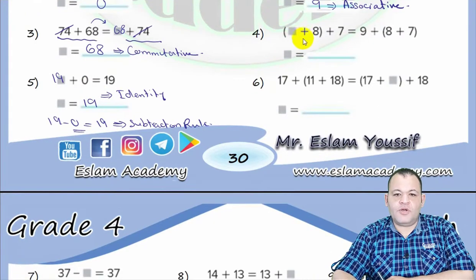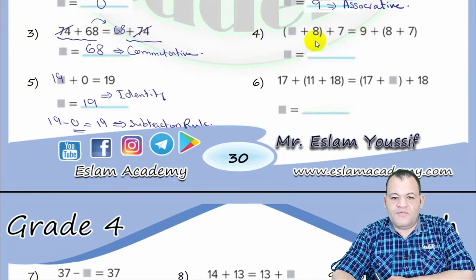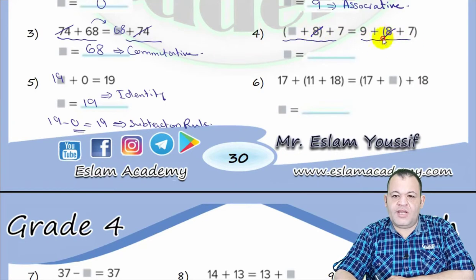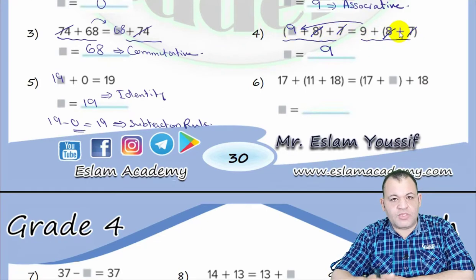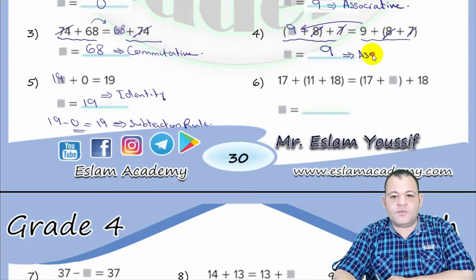In question number four, we have unknown plus 8 plus 7 equals 9 plus 8 plus 7. Because of the equal sign, the left side must equal the right side. We have 8 and 8, and 7 and 7, so the missing number is 9. We have three numbers with the same order — 9, 8, and 7 on both sides — but the numbers inside the brackets are different, so this is defined by the associative property.